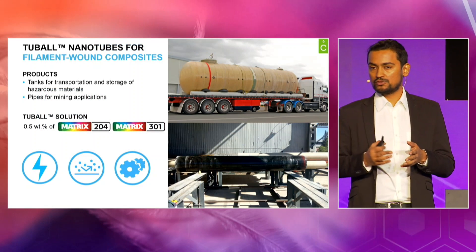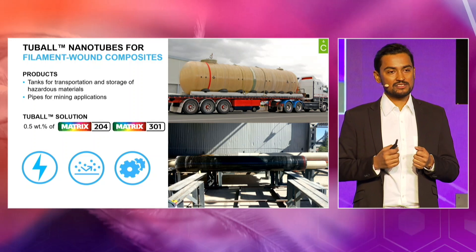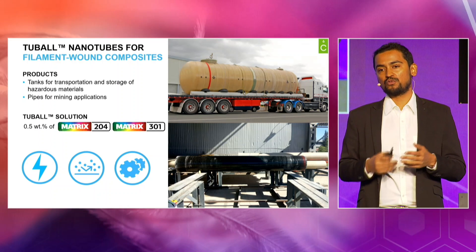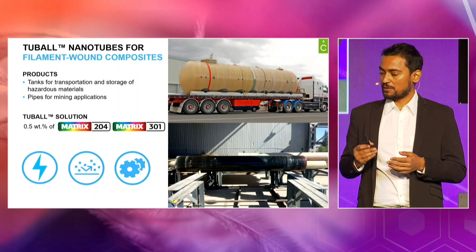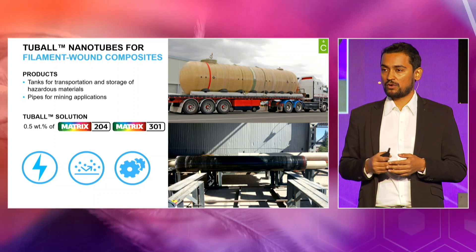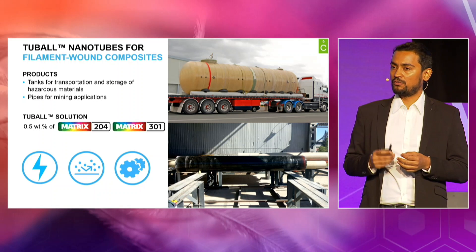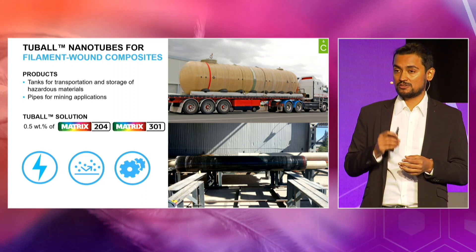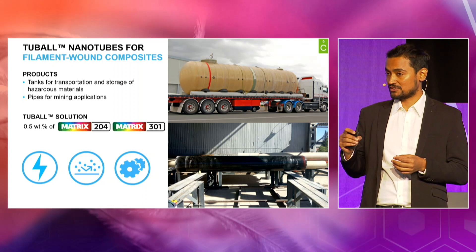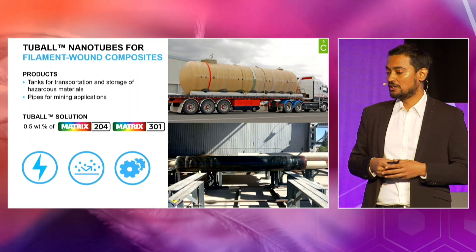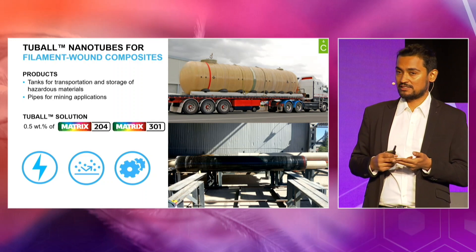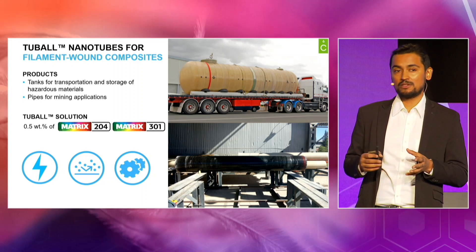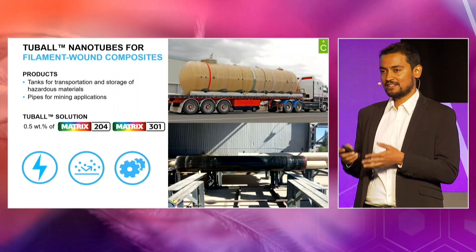Let me move to some more commercial cases. The success of nanotubes in commercial areas — this slide primarily talks about filament winding composites. For example, in tanks and filament wound pipes, addition of a very small amount of nanotubes — 0.5% concentrate which is 0.05% real nanotubes, extremely low — gives conductivity, colors, meaning colored pipes and colored tanks, and the whole range of resistivity with mechanical performance either enhanced or retained.